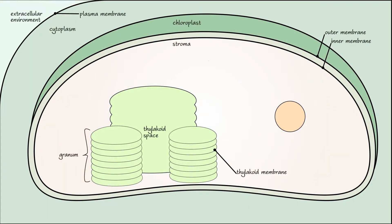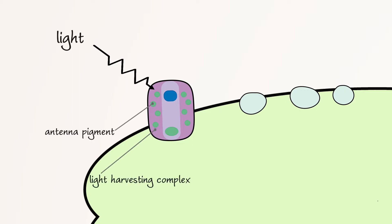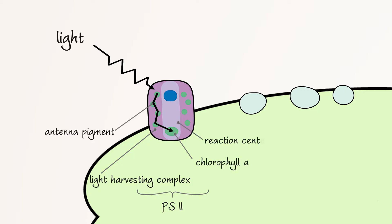Now let's return to the diagram of our plant cell and zoom in on the thylakoid membrane. Photosynthesis starts when light strikes the antenna pigments located in the light-harvesting complexes of photosystem II. Energy is funneled from the antenna pigments to a pair of special chlorophyll A molecules located in the reaction center. This chlorophyll A molecule is also known as P680 because it absorbs light of wavelength 680 nm best. The funneled energy excites the electron in the chlorophyll A molecule, and the excited electron, now in its higher energy state, is transferred to the primary electron acceptor. The chlorophyll A molecule is now electron deficient.